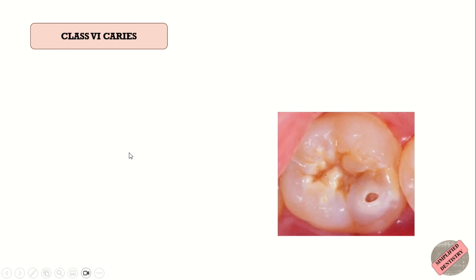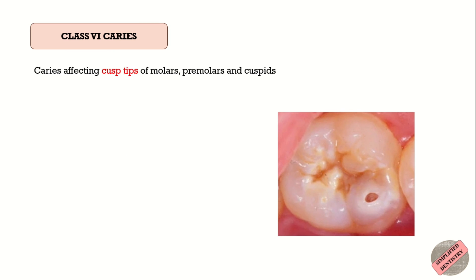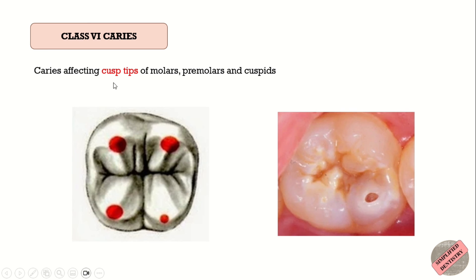Class 6 was never described by Black and was later added by Simon. It includes caries affecting the cusp tips of molars, premolars, and cuspids — that is, the canines — without including any other surface.